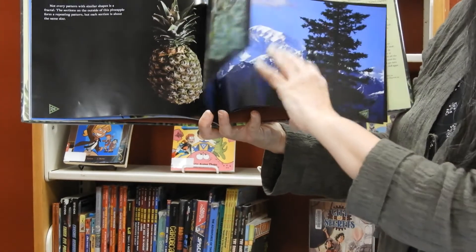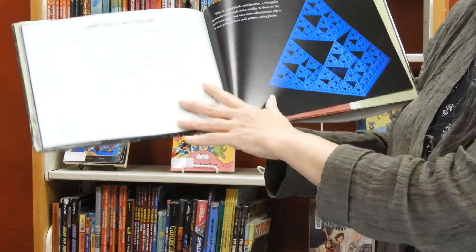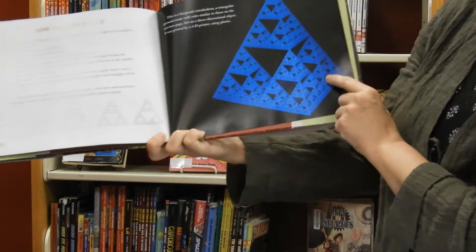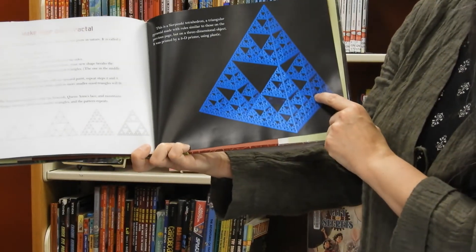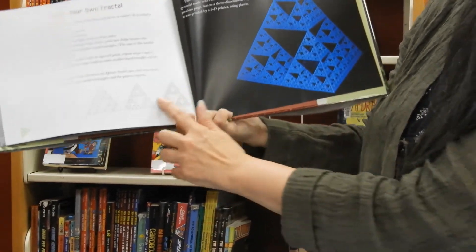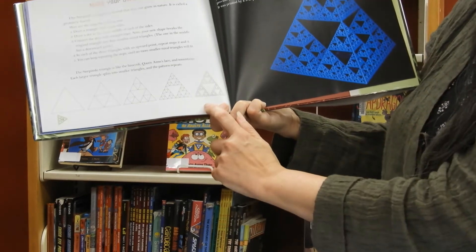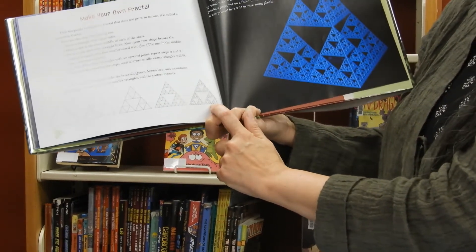All right, so today the thing that I want us to look at is we're going to make our own fractal. I know this is computer generated and looks really cool and it's a 3D representation, but what we're going to do is we're going to use paper and pencil and we're going to build our own Sierpinski triangle.